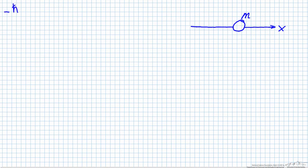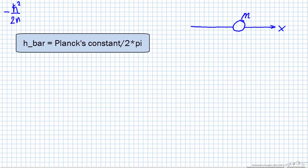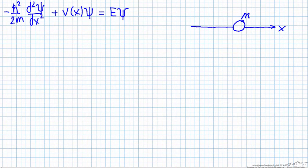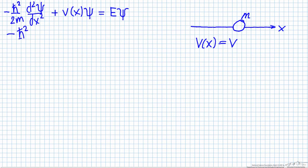We start by writing down the Schrödinger equation: h-bar squared over 2 times the mass, times the second derivative of the wave function with respect to x, plus the potential times the wave function, equals the total energy times the wave function. I wrote a normal derivative since this is a one-dimensional problem. The potential is a constant in x, so when I move it to the right side of the equation, I rewrite it as just a constant.